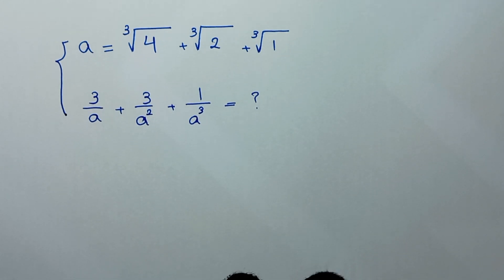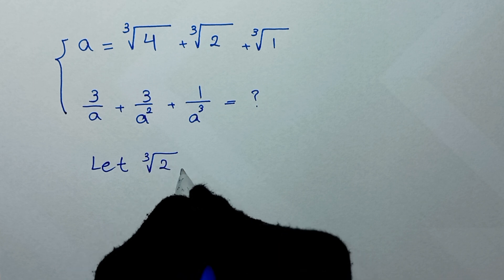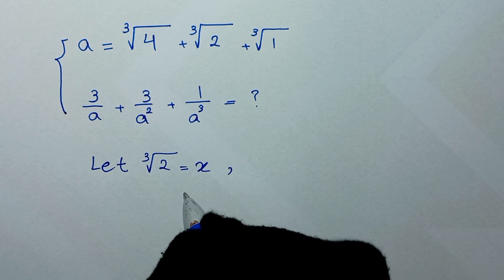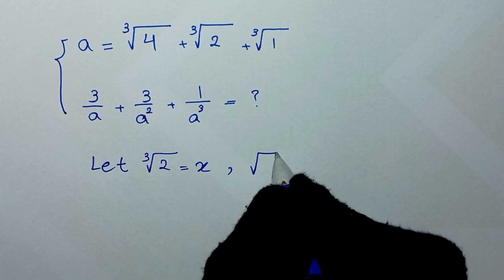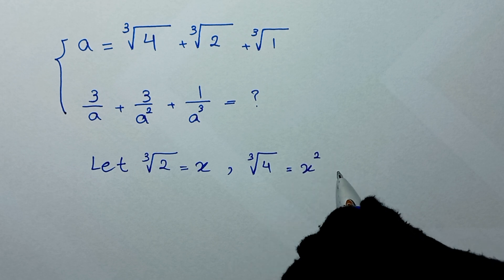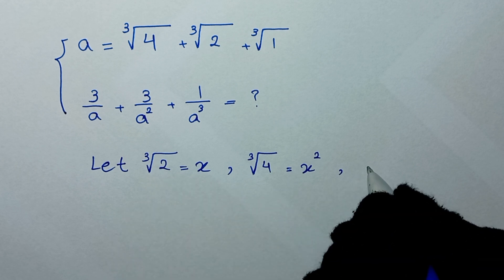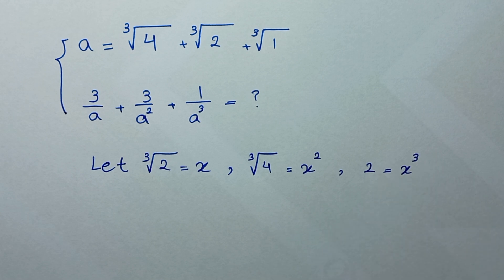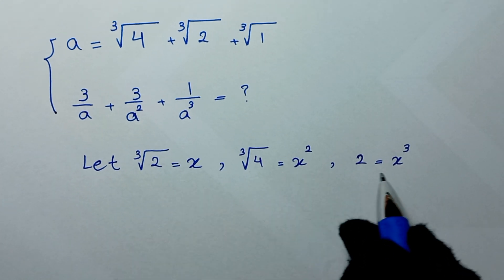In the first step we start by letting the 4th root of 2 equal x. So from here, if we raise both sides by the power of 2, the 4th root of 4 becomes x squared, and if we raise both sides by the power of 3, then 2 is equal to x cubed. So we find these three values for x, x squared, and x cubed.